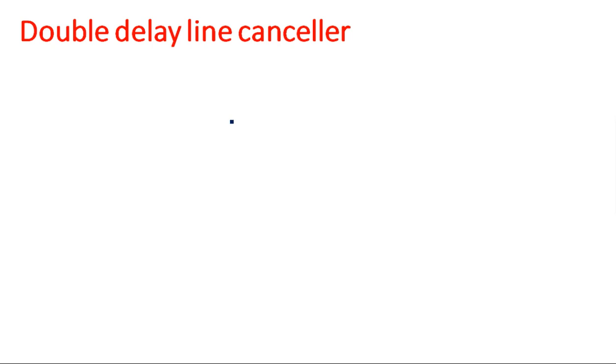In this video I am going to explain the double delay line canceler. In the previous videos I explained the delay line canceler and the problem with it in MTI radar, like blind speed. In this video I will explain the double delay line canceler, which performs the delay process two times. Before going to the double delay line process, what is the drawback in the delay line canceler and the necessity to move to double delay line cancellation?